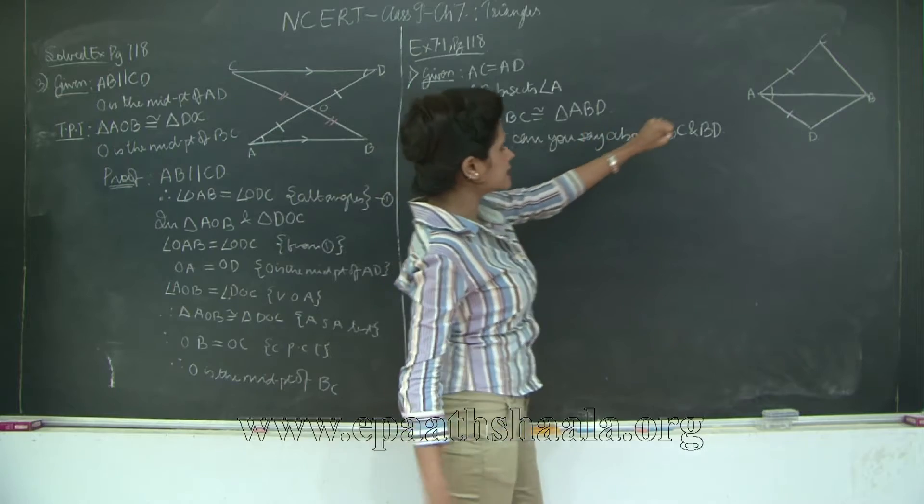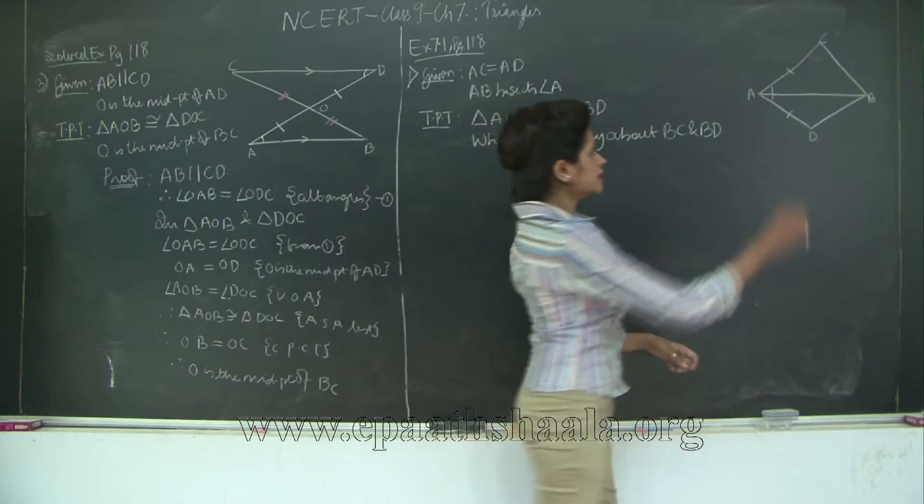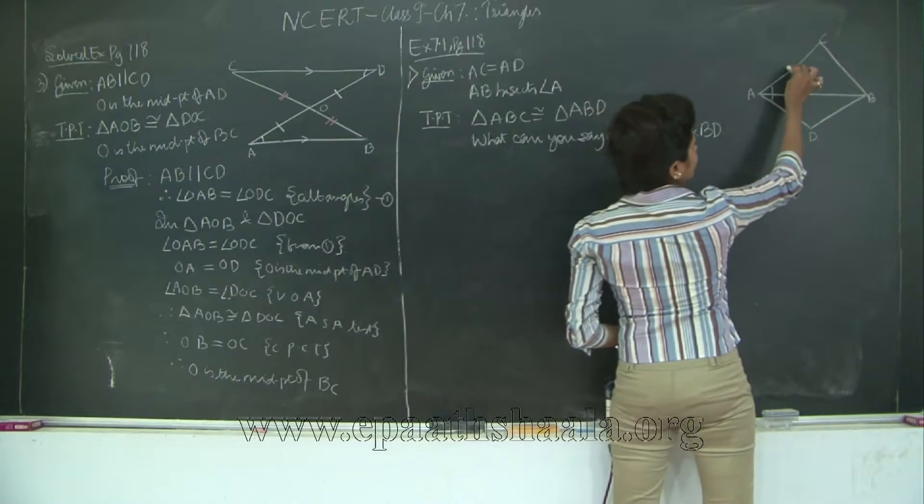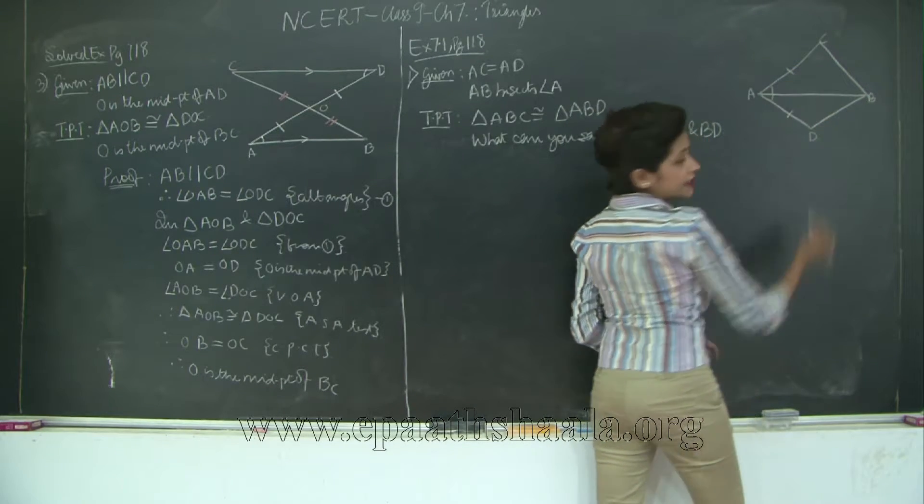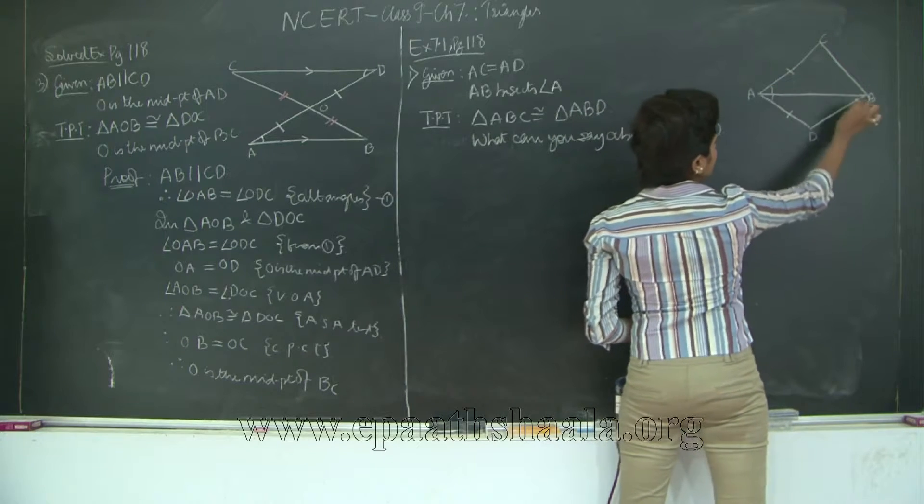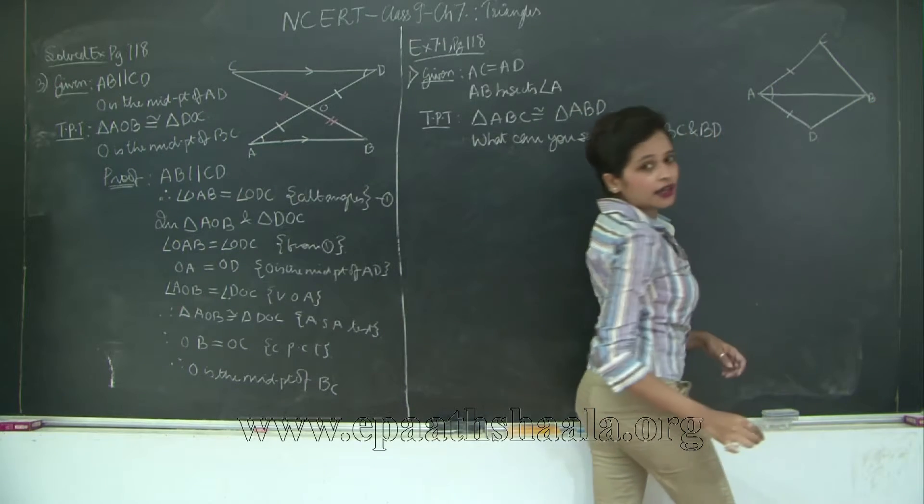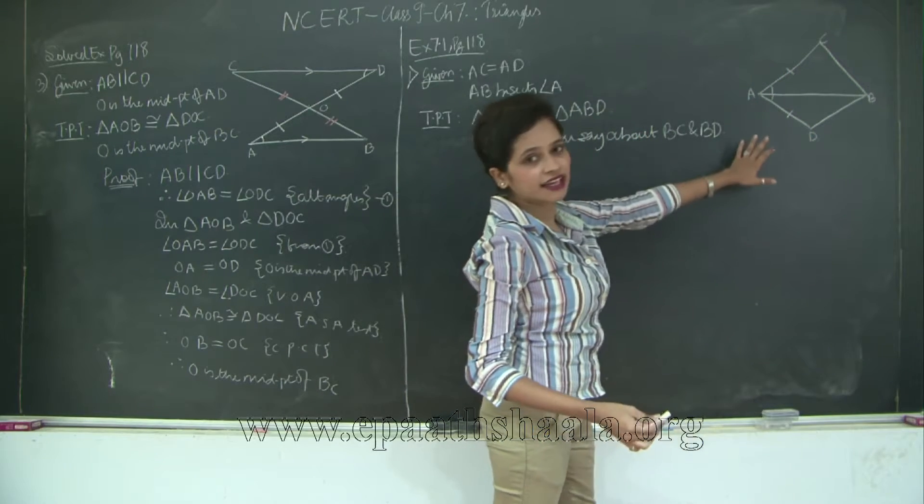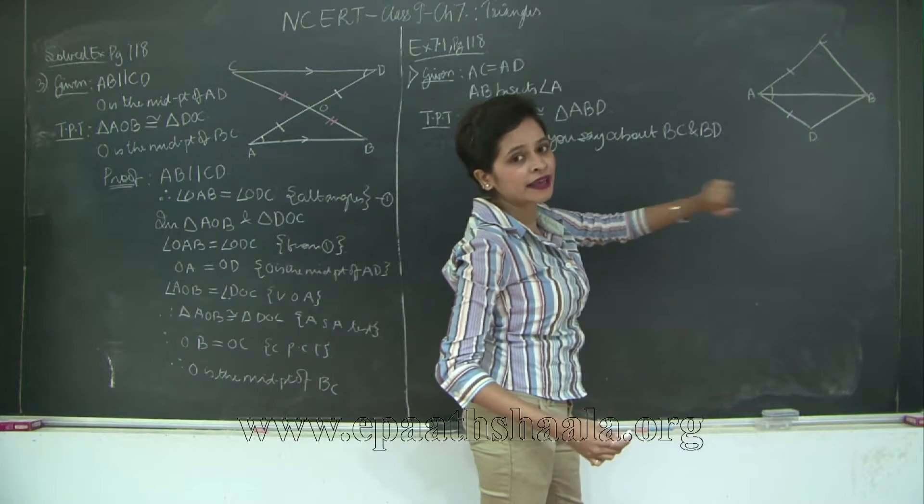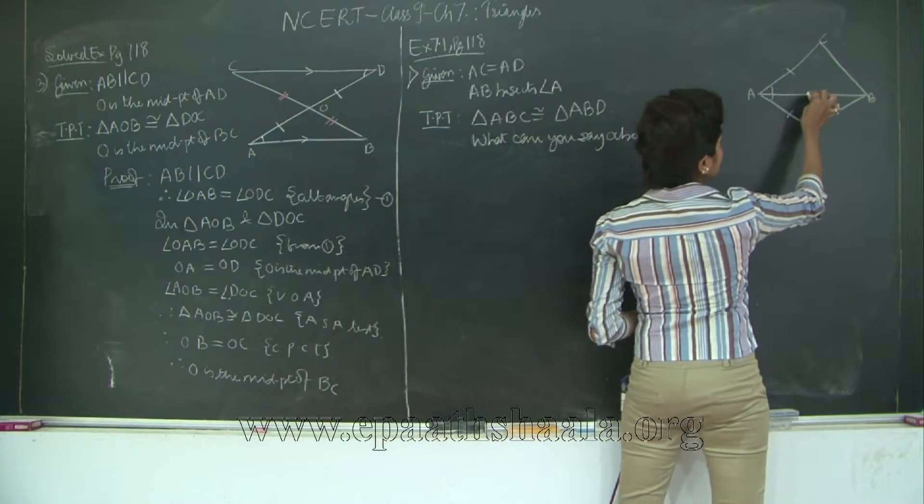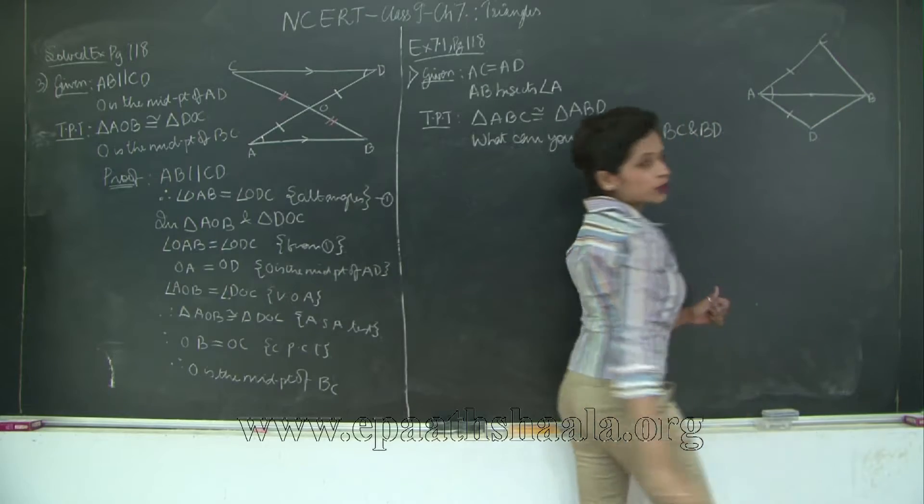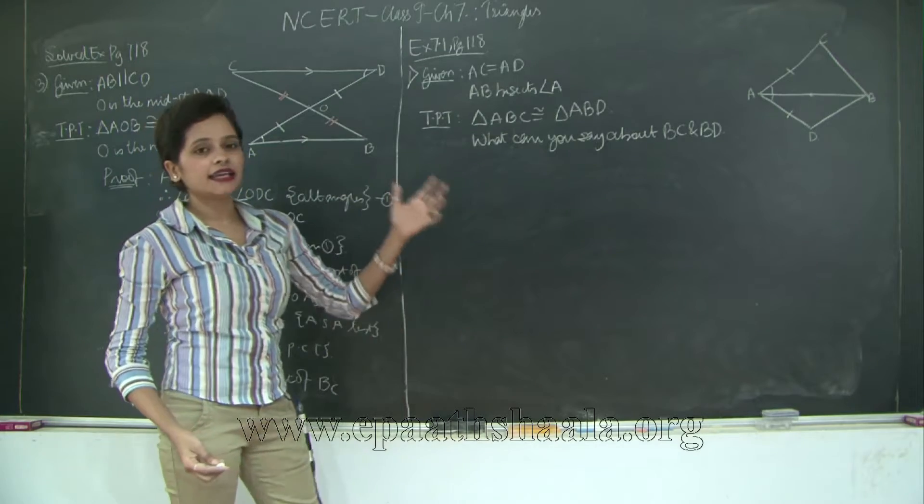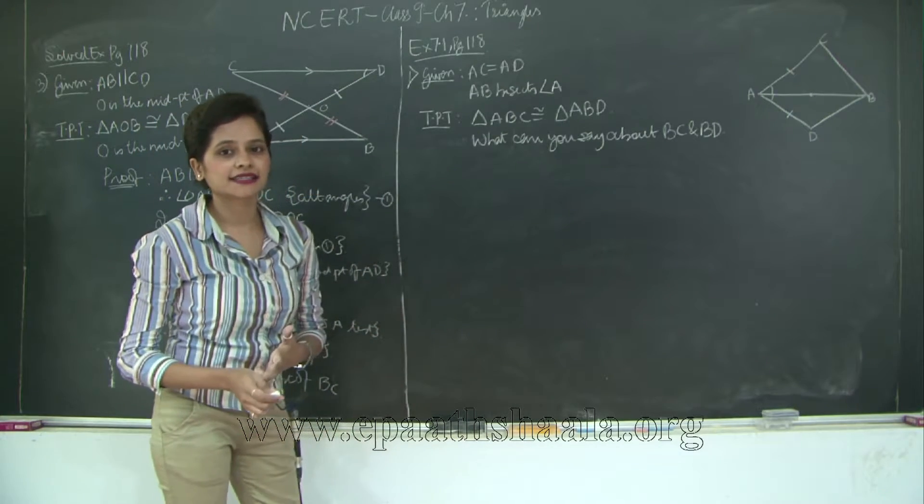So if you notice your triangles ABC and ABD. What do I get? I have AC is equal to AD which is given. I have CAB is equal to DAB. Why? Because AB bisects angle CAD. Therefore the two angles made are congruent by the angle bisector property. Also we have this side common AB for both the triangles which is going to be equal.